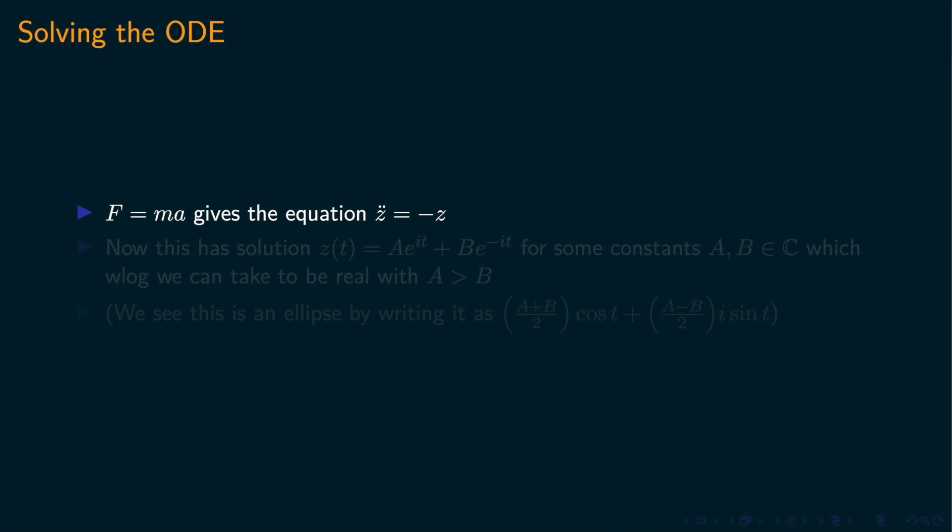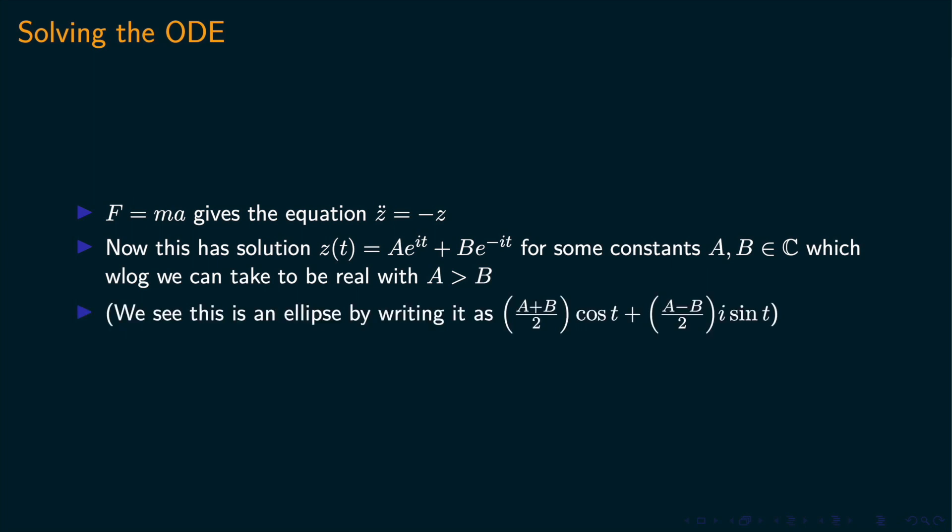From now on, we'll let the mass of the particle be 1 so we don't have to worry about it, and force equals acceleration. This has solution p e to the i t plus q e to the minus i t. We can see this as an ellipse by writing it as a sum of sine and cosine.